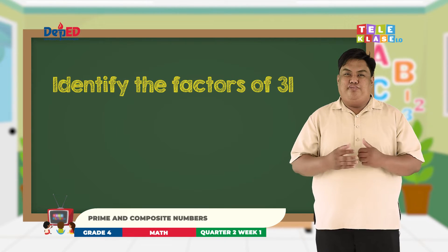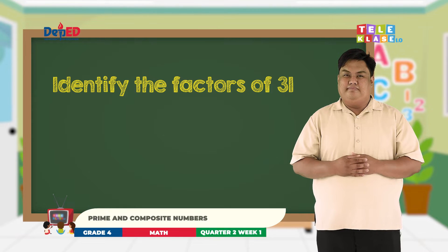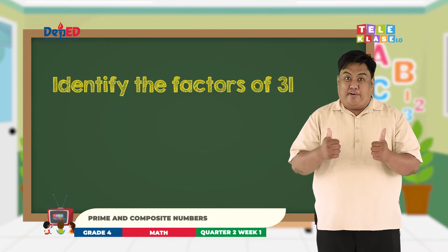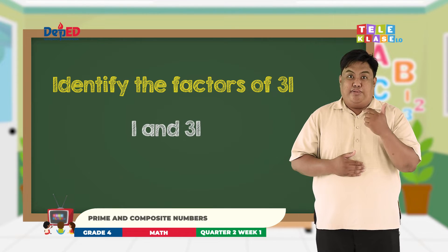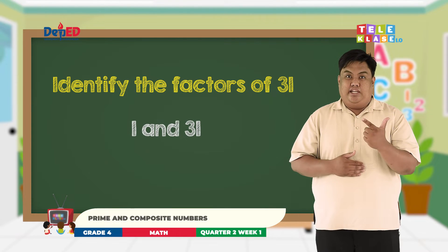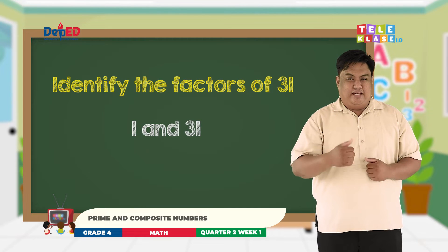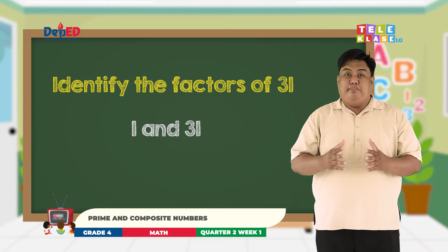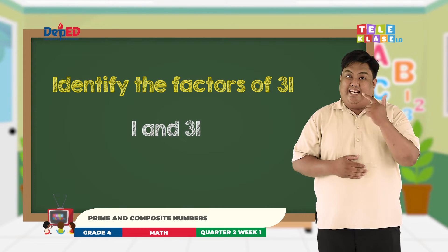So how about the factors of 31? Very good! The factors of 31 are 1 and 31, and no more. Good job! That means 31 has only 2 factors, 1 and itself.